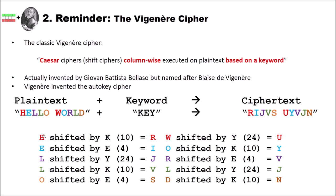We assign numbers to the letters of the keyword. Our letter K is the 10th letter, so we shift H from our plaintext 10 positions to the right — H becomes R. For E, we use the next key letter E, shifting by 4, so E becomes I. For L, we use key letter Y, which is 24 shifts to the right, giving us J. Now we are at the end of our keyword, so we repeat it. The next L is shifted by K (10 again). With the keyword 'key', we always have shifts 10, 4, 24, 10, 4, 24, and so on. This is what we call a polyalphabetic substitution cipher.